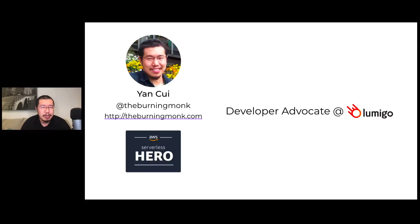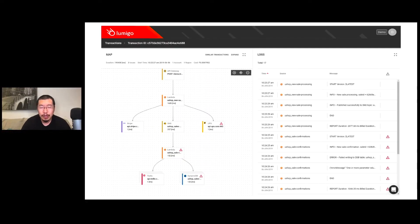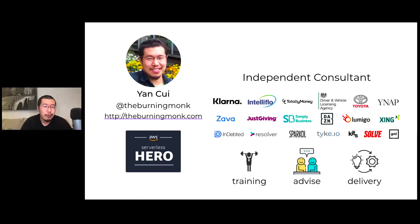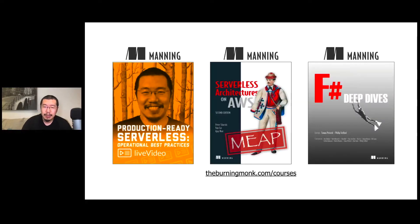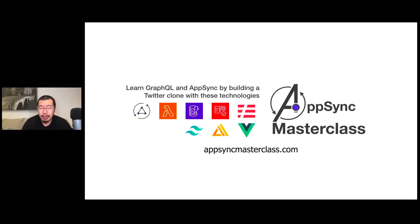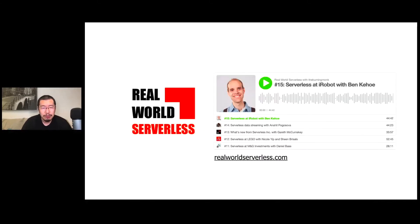Nowadays I spend half of my time working with Lumigo as a developer advocate. Lumigo is a troubleshooting platform for serverless applications, which makes it easy to monitor and troubleshoot problems in production with your Lambda functions and AppSync APIs. The other half of my time I work as an independent consultant where I advise and help companies adopt serverless technology through training, advice, and sometimes working with clients to deliver an MVP very quickly. I've also written a couple of books with Manning, published a video course, and recently published a new video course on AppSync open for access at AppSyncMasterclass.com. I also run a weekly podcast called Real World Serverless.